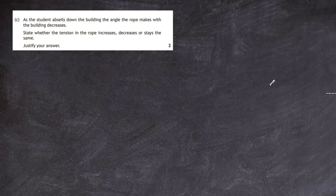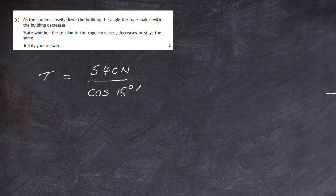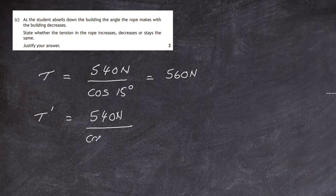Now we know from the previous example that the tension in the rope was equal to the weight of the abseiler, 540 newtons, divided by cosine of the angle which the rope made with the wall. And we worked that out and it gave us a value of 560 newtons. So we know the numerical value of the tension. But if we go to a new tension where we have 540 newtons, the same weight, but this time the angle is going to be a bit smaller, we'll guess an angle, 7 degrees. And if we do that in our calculator, we end up with an answer of 544 newtons. So you can see that the tension has actually decreased.